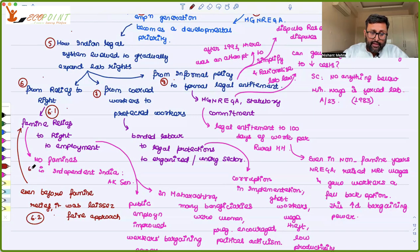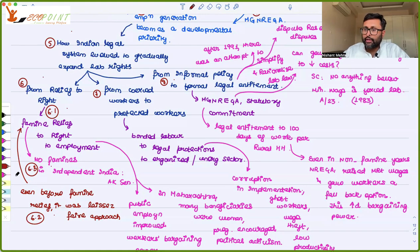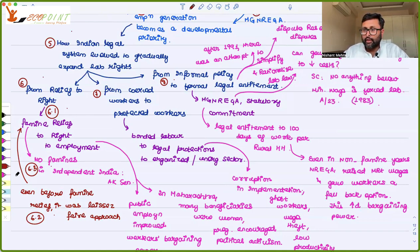Professor Amartya Sen says there are no famines in independent India in a democracy. Why? Because if you have famines and you are in government, people will start questioning you. You have to have policies to prevent famines. It is the responsibility of the government that people should not face any famines, and in times of such crises, they should be given some kind of help.